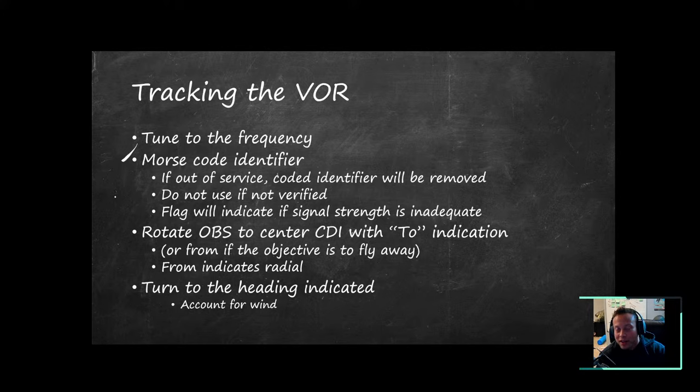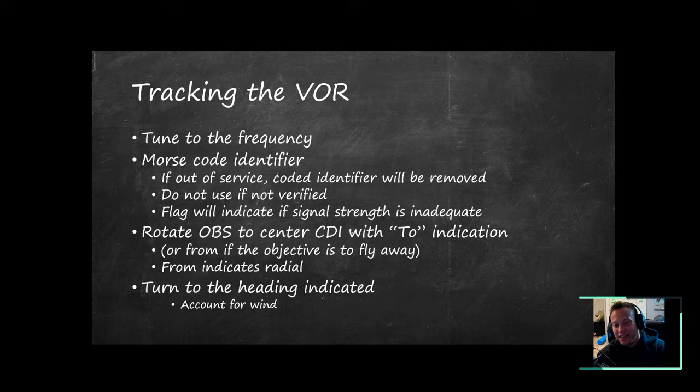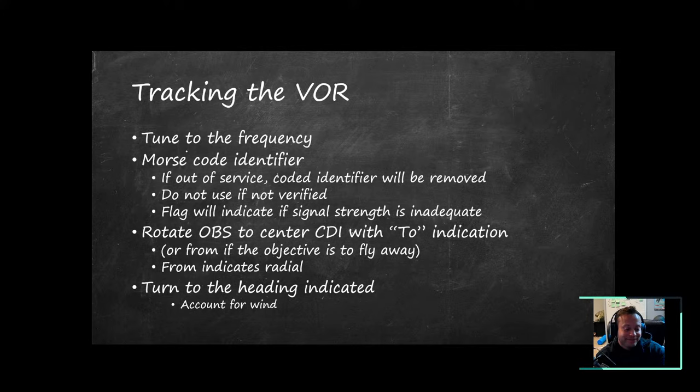We've tuned 110.6, listened to the Morse code identifier, and now we rotate the OBS knob to center the CDI with the to indication — or from if flying away — indicating the radial or course we're on. Remember the VOR does not care where your nose is pointed; it only cares about your position relative to the station. So fly in the same direction your VOR indicates, otherwise it'll be virtually useless.